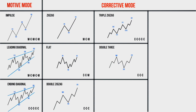Let's look at the triple three. The triple three consists of five waves — three waves formed in the corrective mode connected by intervening waves. The triple three is denoted by the letters W, X, Y, X, and Z. The task of the triple three is to form a shallow but long corrective wave. Usually the triple three has a slope against the dominant trend.